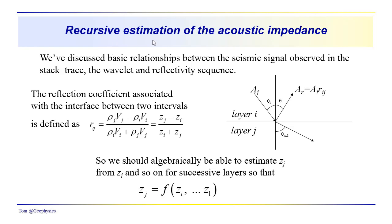We're going to introduce this idea of recursive estimation of acoustic impedance. We discussed previously basic relationships between the seismic signal observed in the stack trace, the wavelet, and the reflectivity sequence. We defined this reflectivity using this notation here, where this would be the reflection coefficient between layers i and j, r sub i j.